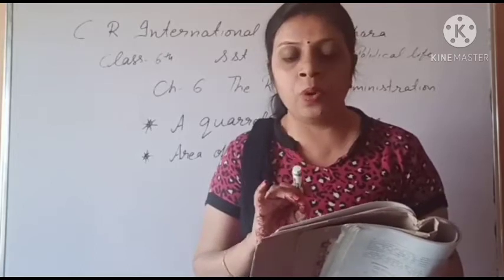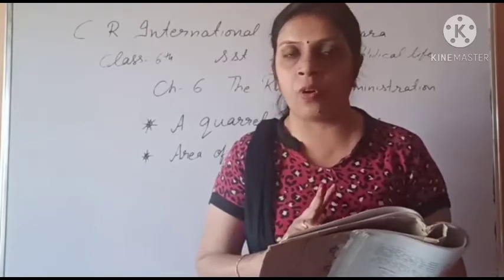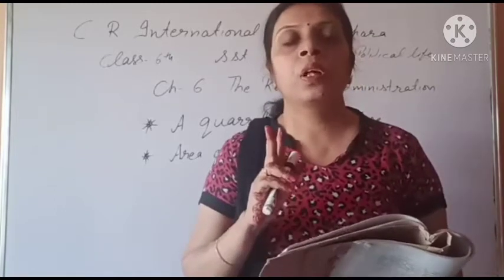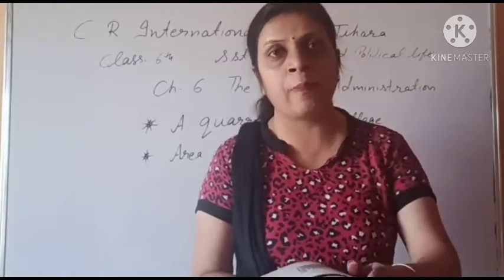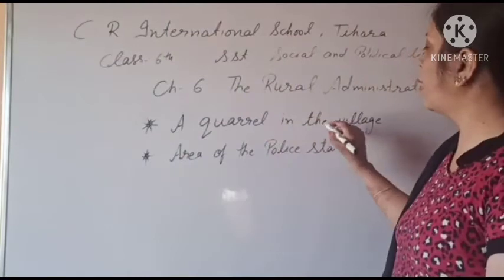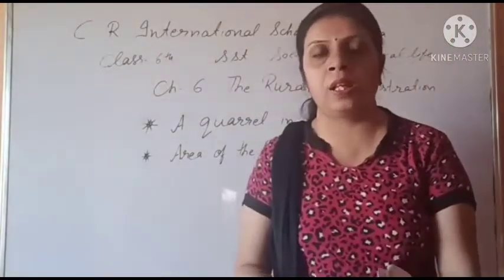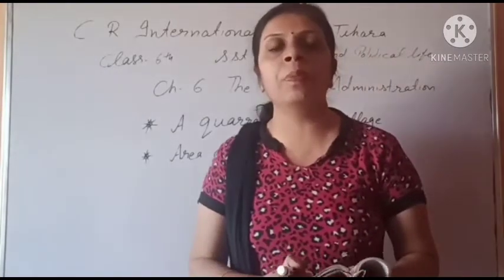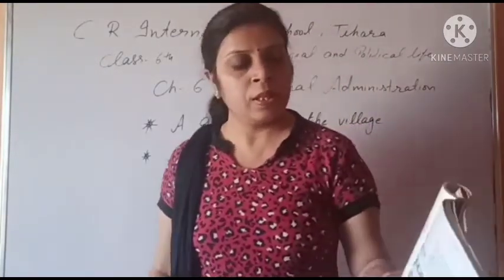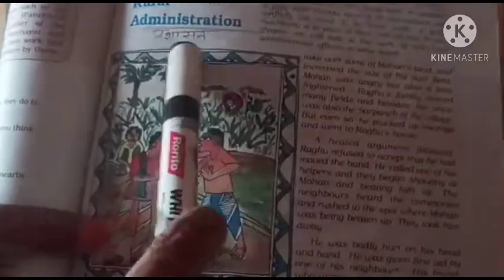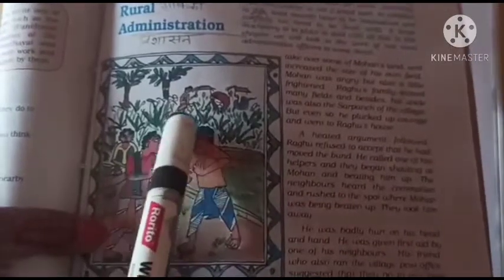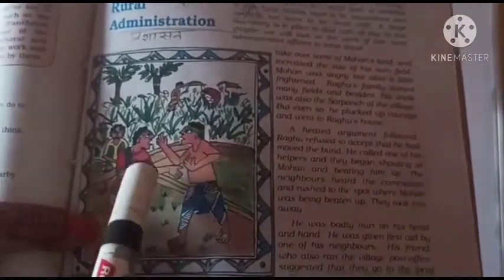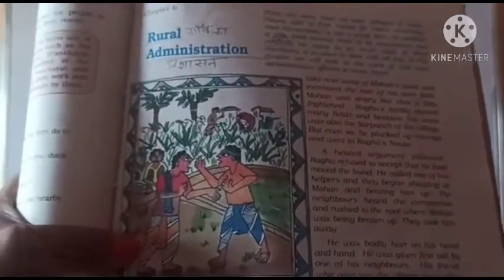In this chapter, we will look at the work of two rural administrative officers. Aaspaas ka area dekhiye — yeh khet dikh raha hai, aur yahaan par yeh donon jhagad rahe hain — dono gramin prashasnik adhikariyon ke baare mein hum is chapter mein padhenge.